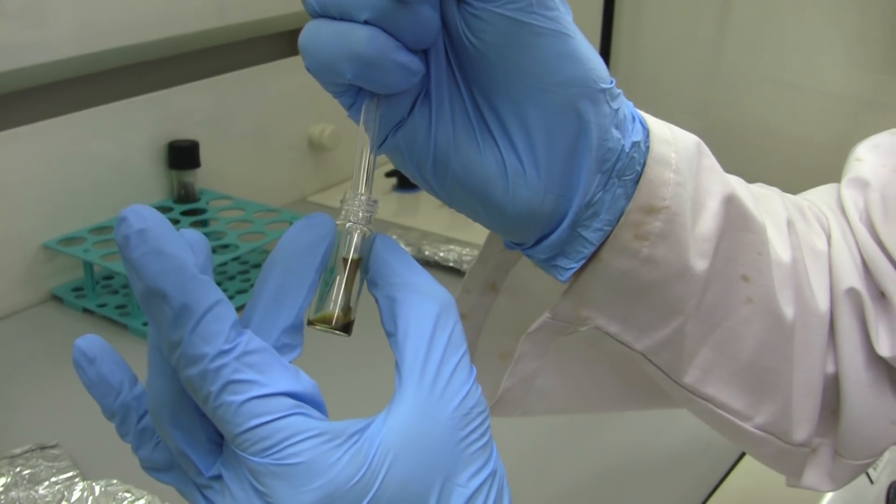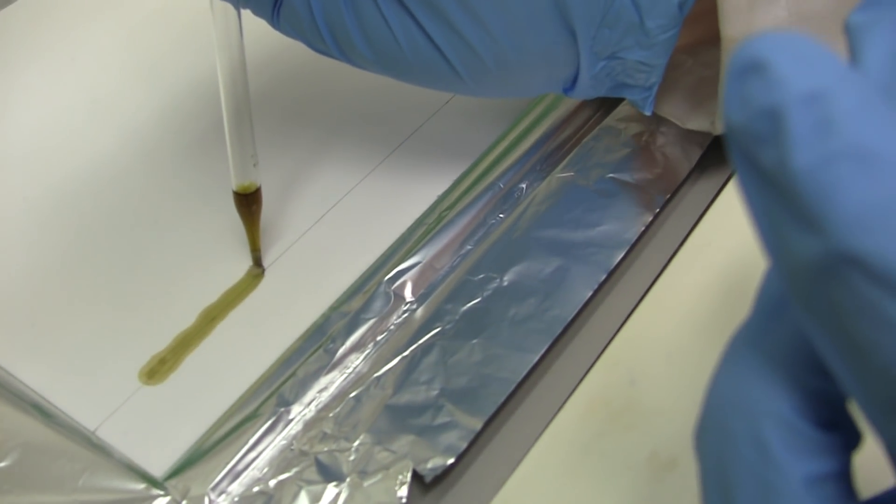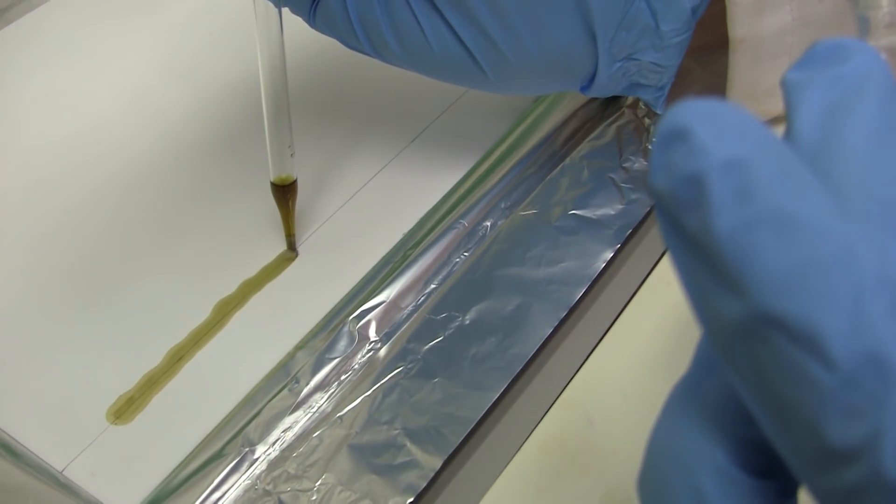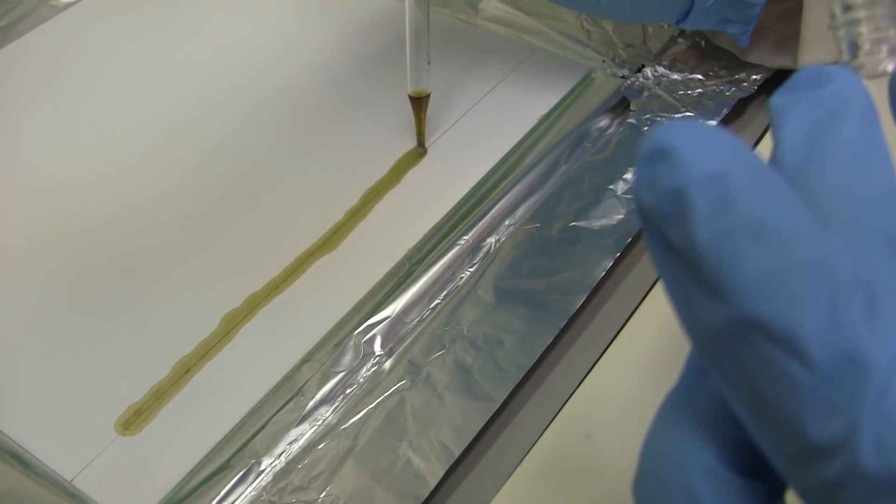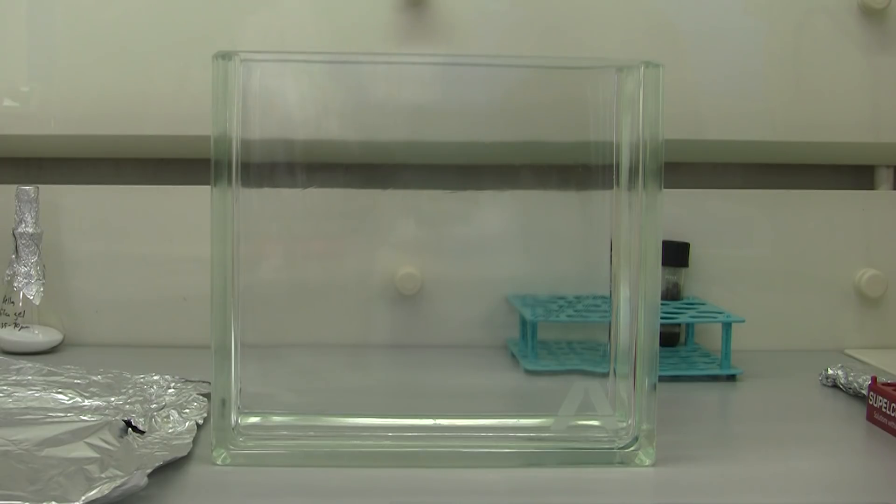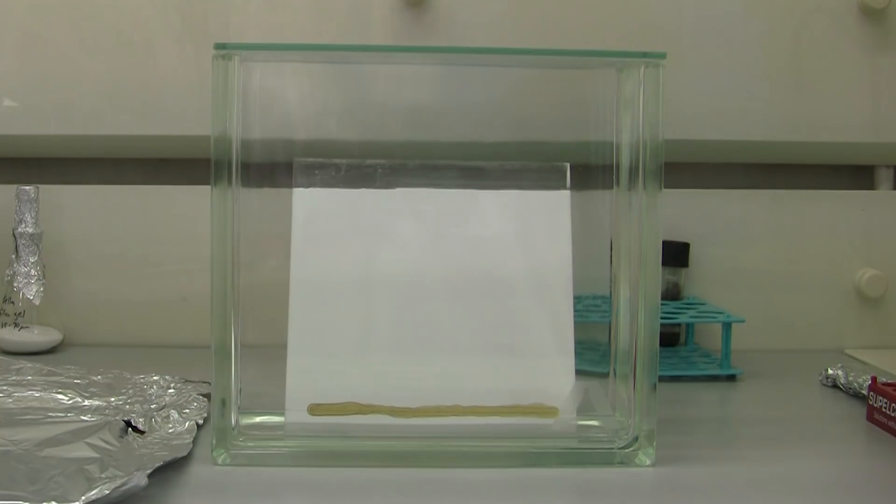For this we can use thin layer chromatography. By putting the pigments on these specific plates we can separate the mix of the pigments into the different components. For this we put drops of our solution on the start line. Then we put it into a specific solvent solution and then you already see the different pigments moving upwards.